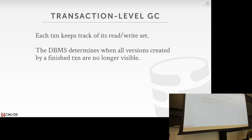For transaction-level garbage collection, we maintain the read-write sets of transactions and use them to figure out what versions are no longer visible, then reclaim the space. We know exactly when they commit, and thus can figure out when versions are no longer visible and can be vacuumed.